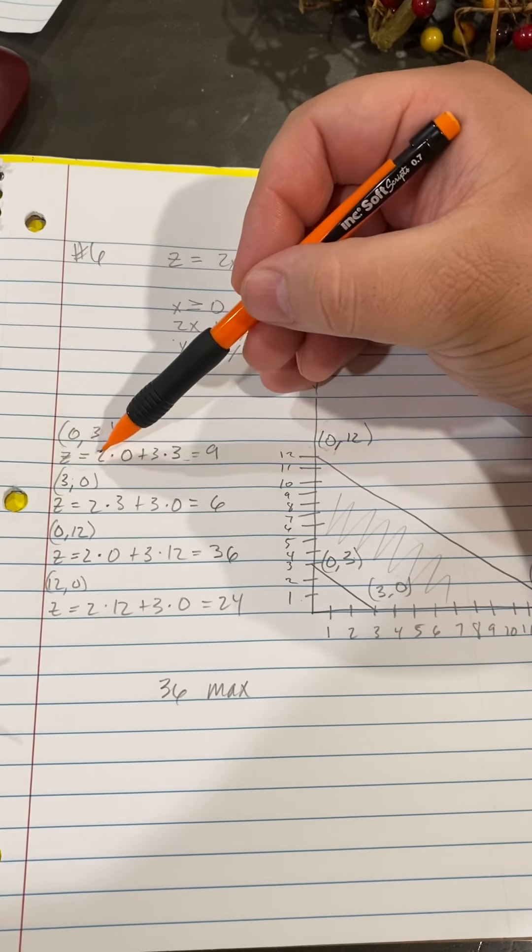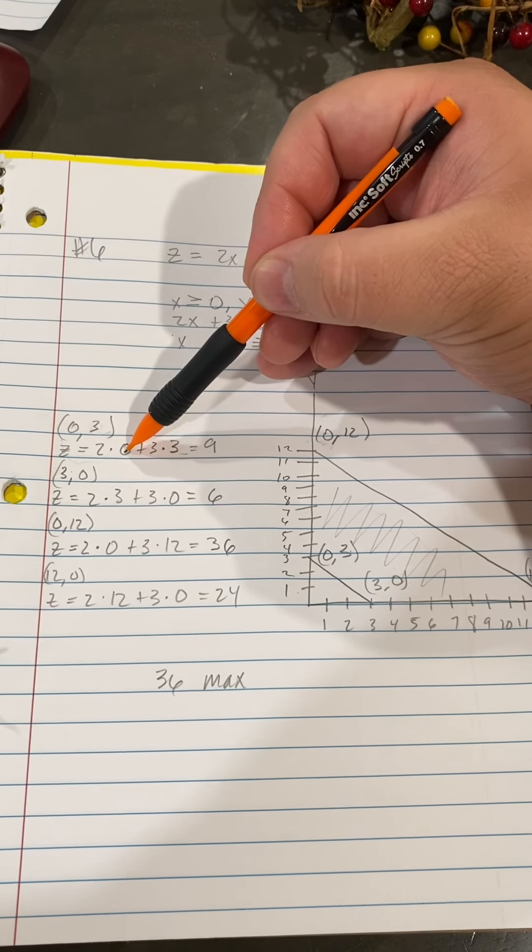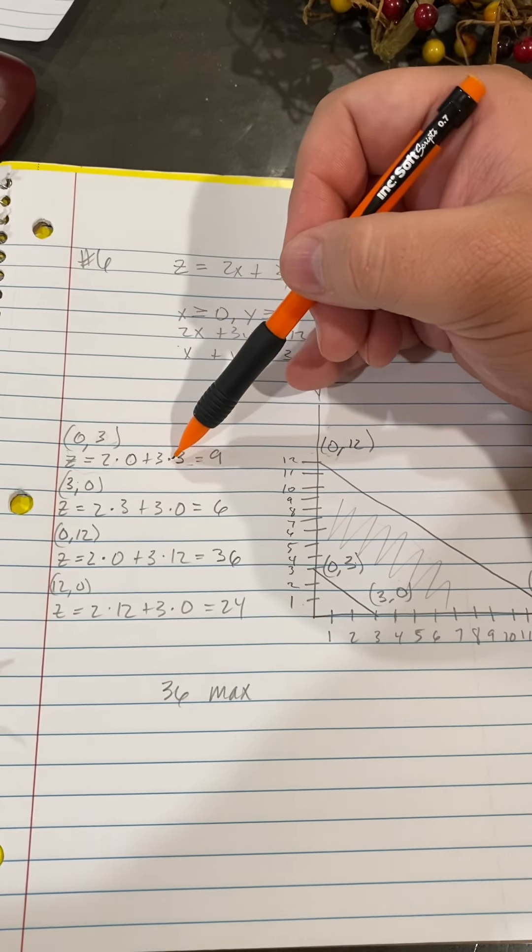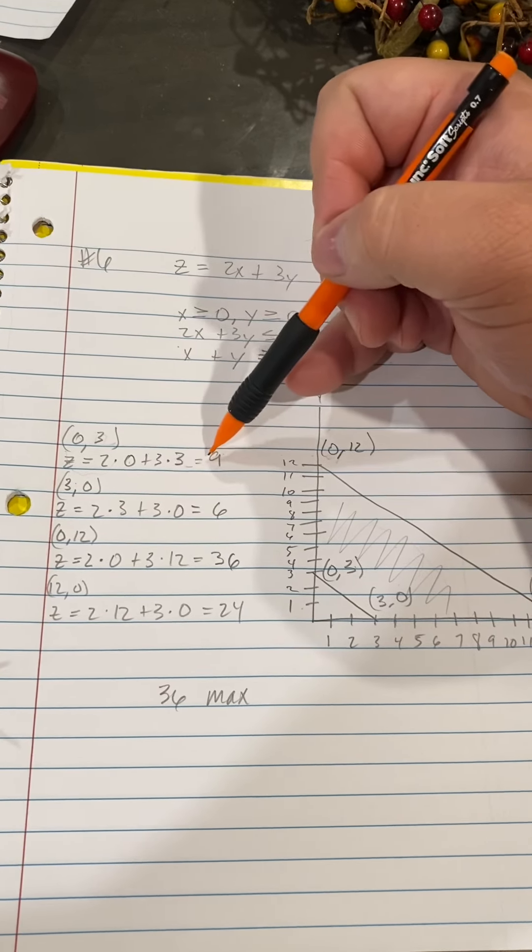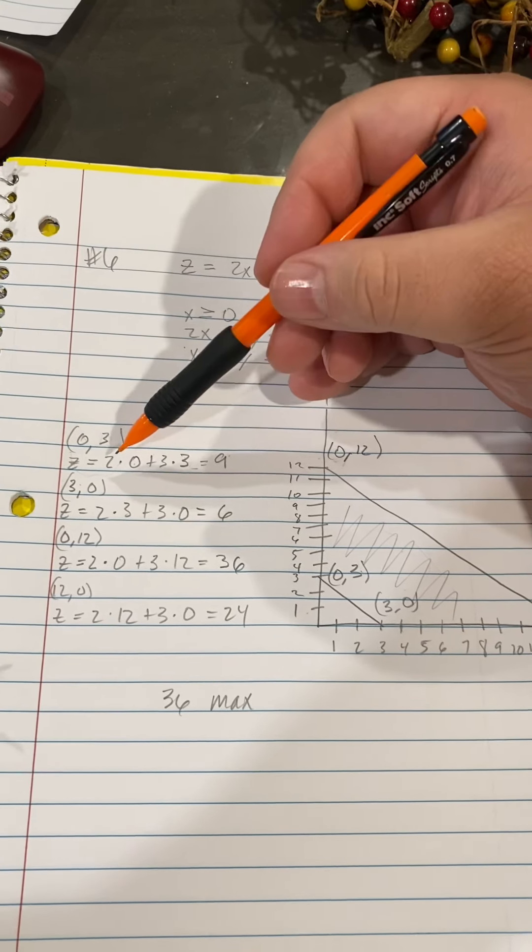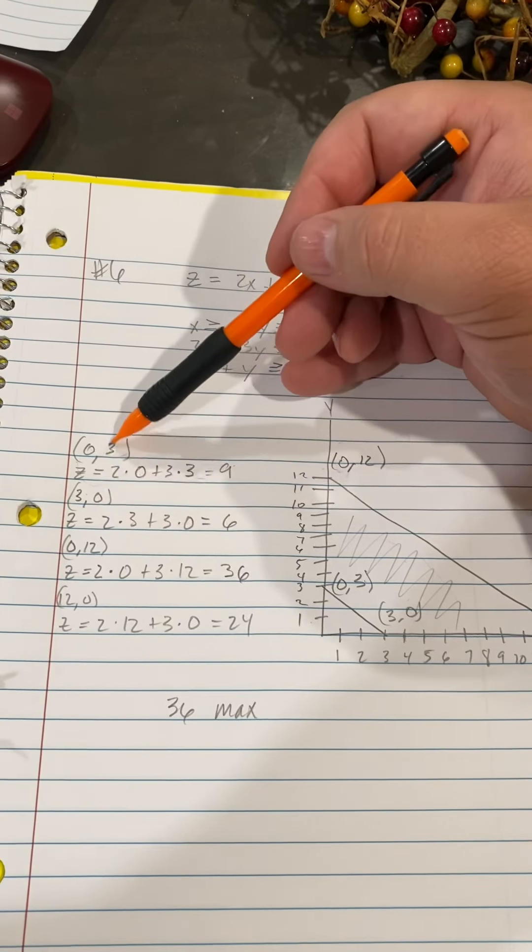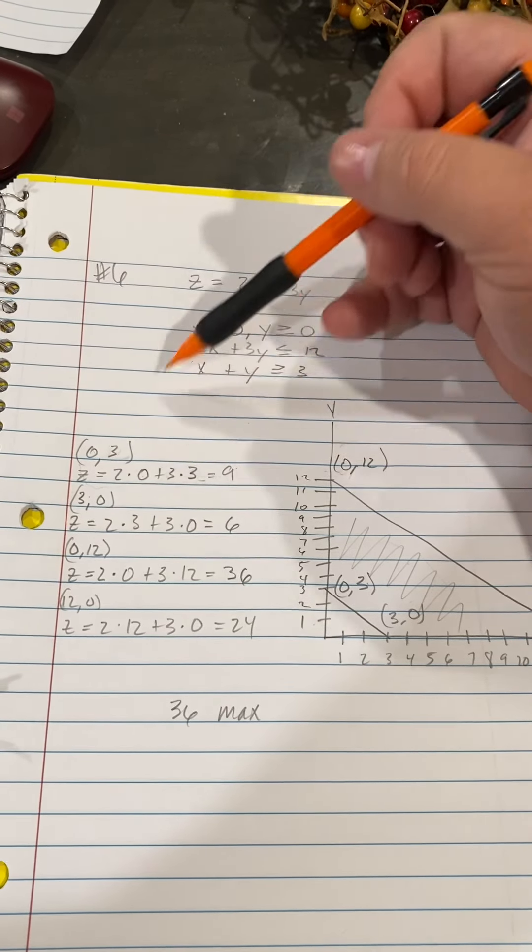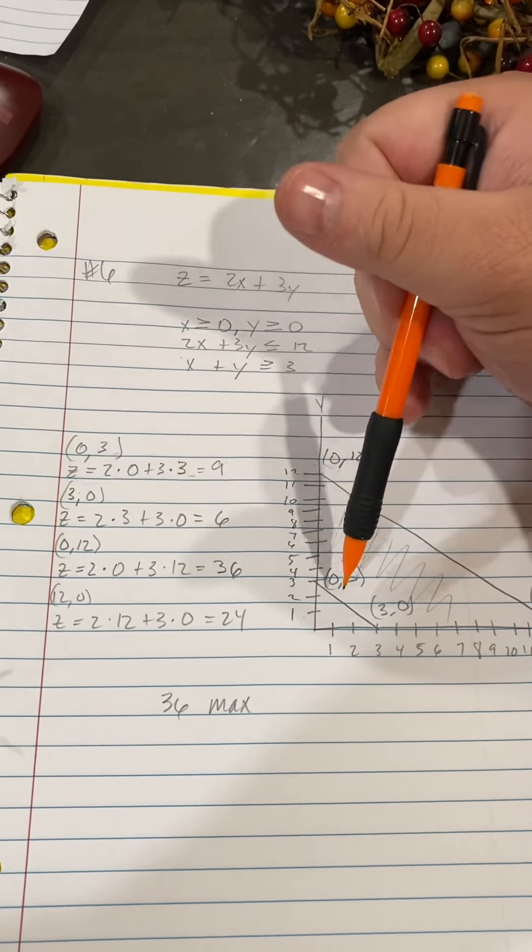Z equals 2 times 0, because X goes here, plus 3 times 3, which is Y, equals 9. 3 times 3 is 9, and 2 times 0 is 0. Then I keep moving down this same equation and plugging in my points that you see here.